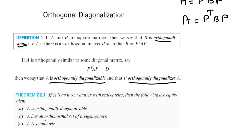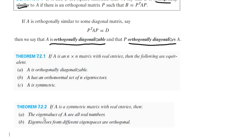We can consider the next theorem: if A is a symmetric matrix with real entries, then the eigenvalues of A are all real numbers. Also, the eigenvectors from different eigenspaces are orthogonal to each other.